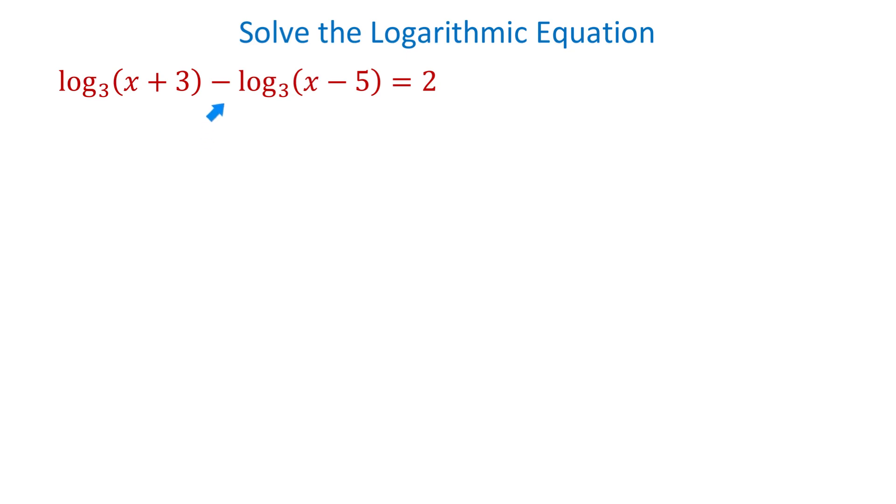On the left side, we have a difference of two logarithms. To condense these two logarithms into a single logarithm, we will use the quotient rule.